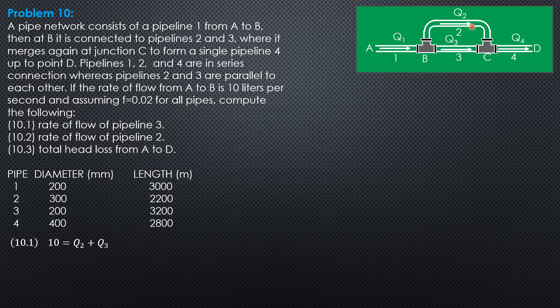And 10 is equal to Q2 plus Q3. And since pipes 2 and 3 are parallel, they have the same head loss, so we can relate their discharges. So, HF2 equals HF3.